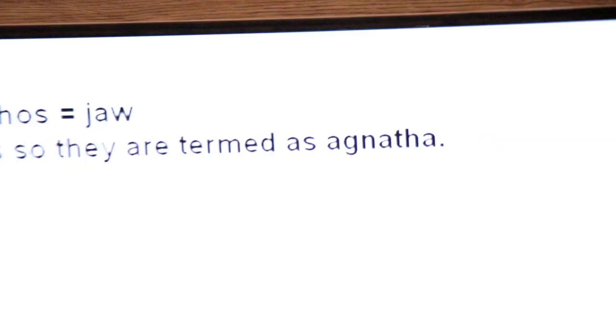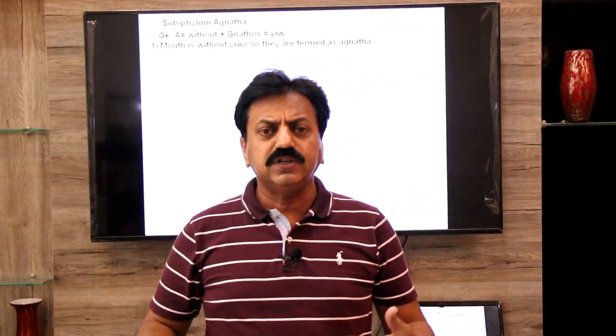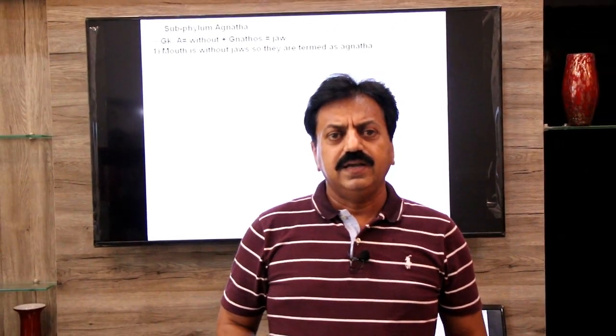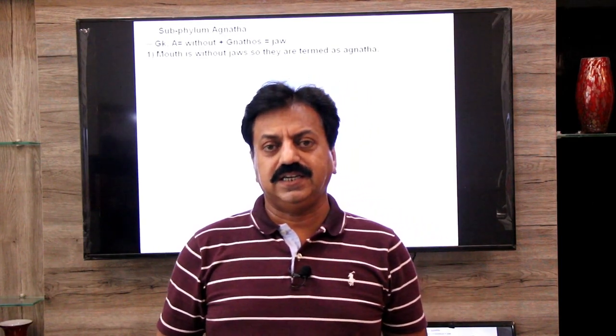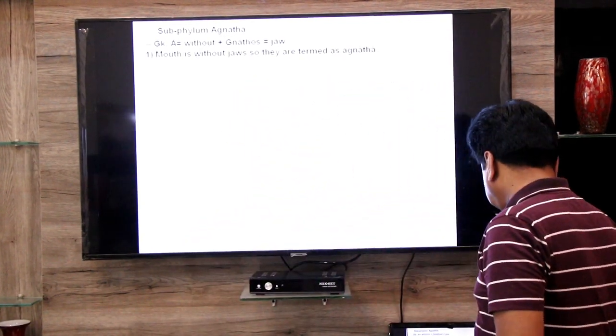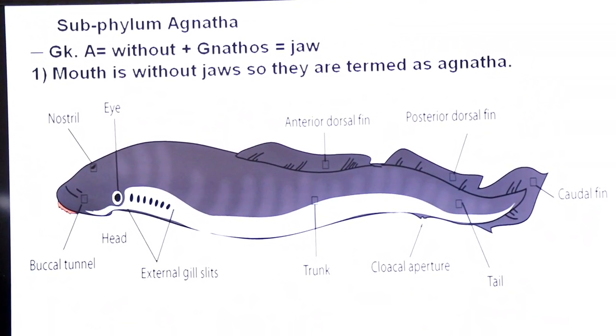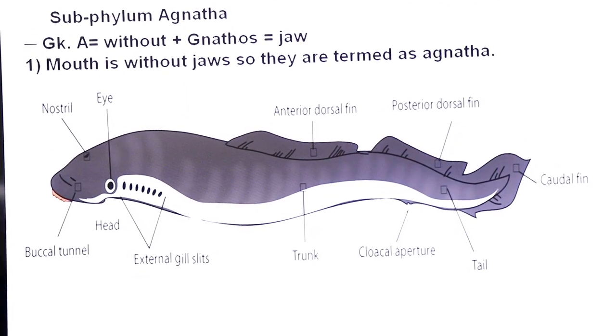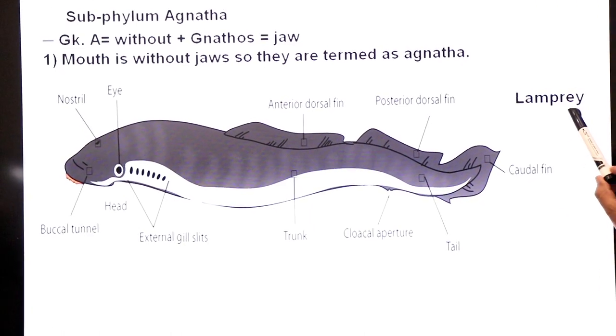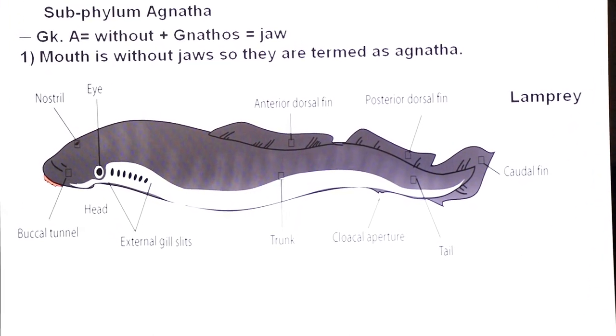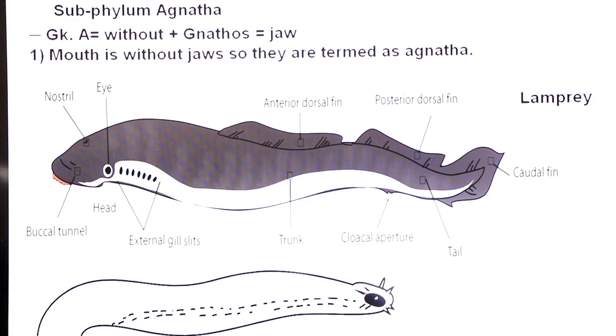Agnatha are aquatic animals, fish-like in appearance but not actually fishes, because fishes have jaws while Agnatha do not. One example is lamprey and another is hagfish — in their mouths, jaws are absent, which is why they are called Agnatha. Lamprey is not a fish, it only looks like one. Hagfish is the second example of Agnatha.